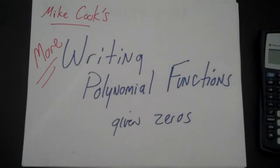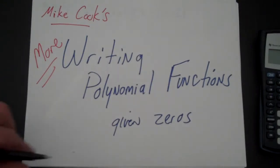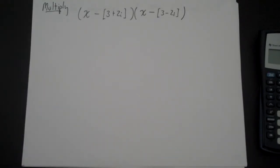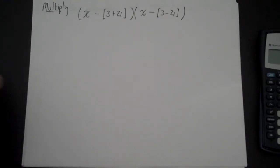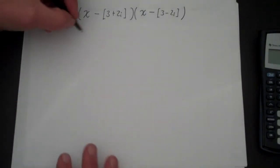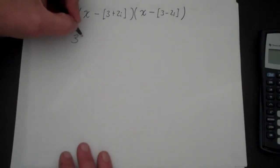We're going to write a polynomial function given zeros. This is the second video with some more examples with more difficult problems. The first thing I want to do is show you a problem. Let's say that we have the problem where a zero is 3 plus 2i.